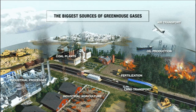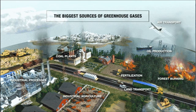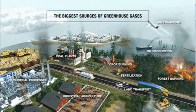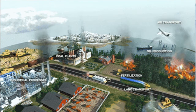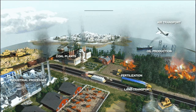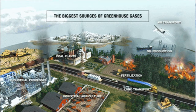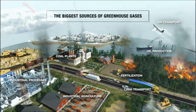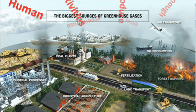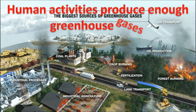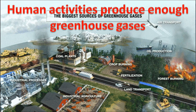The biggest sources of greenhouse gases are air transport, oil production, forest burning, transportation, industry, and agriculture. Human activities produce large amounts of greenhouse gases.